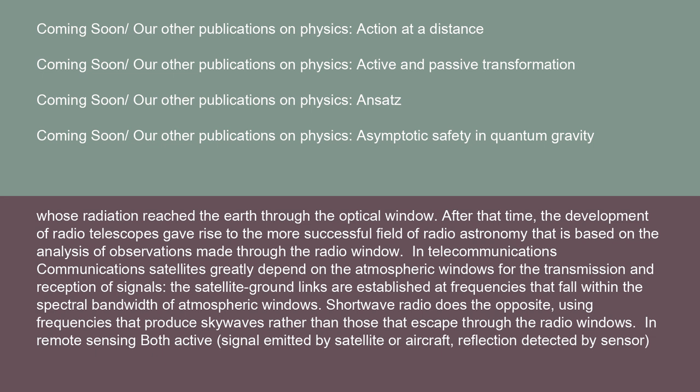In telecommunications, communications satellites greatly depend on the atmospheric windows for the transmission and reception of signals. The satellite ground links are established at frequencies that fall within the spectral bandwidth of atmospheric windows. Shortwave radio does the opposite, using frequencies that produce skywaves rather than those that escape through the radio windows.